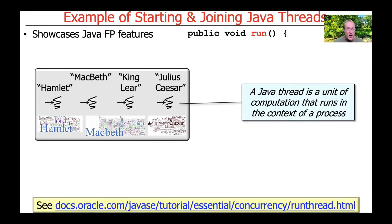What is a Java thread? A Java thread is a unit of computation that runs in the context of something called a process. I'll explain what these things mean in more detail shortly. You can learn more about threads by looking at the link at the bottom of this slide.